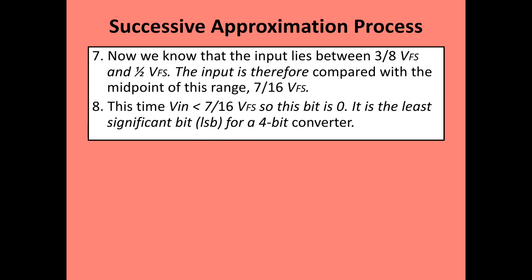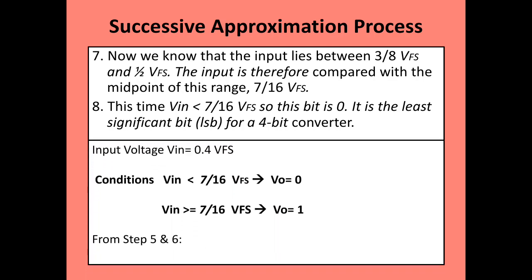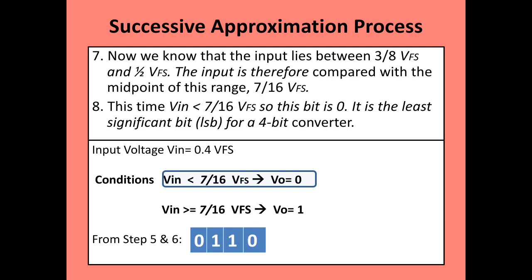Now we take the range from three-eighths VFS to one-half VFS as the full range. The midpoint of this range is 7/16 of VFS. We compare: is V-in less than 7/16 VFS, or greater than or equal to 7/16 VFS? Here, 0.4 VFS is less than 7/16 VFS, so the first condition is satisfied and the output becomes 0. Therefore, the final 4-bit digital output is 0, 1, 1, 0.